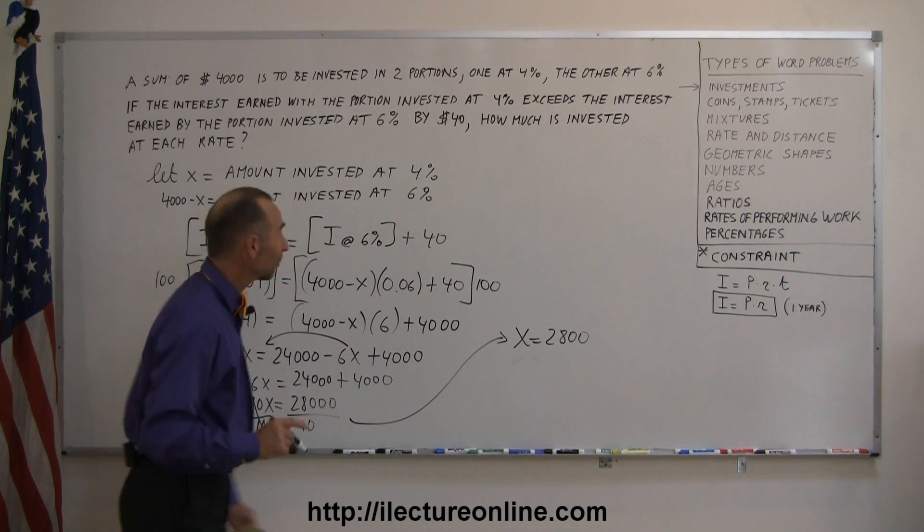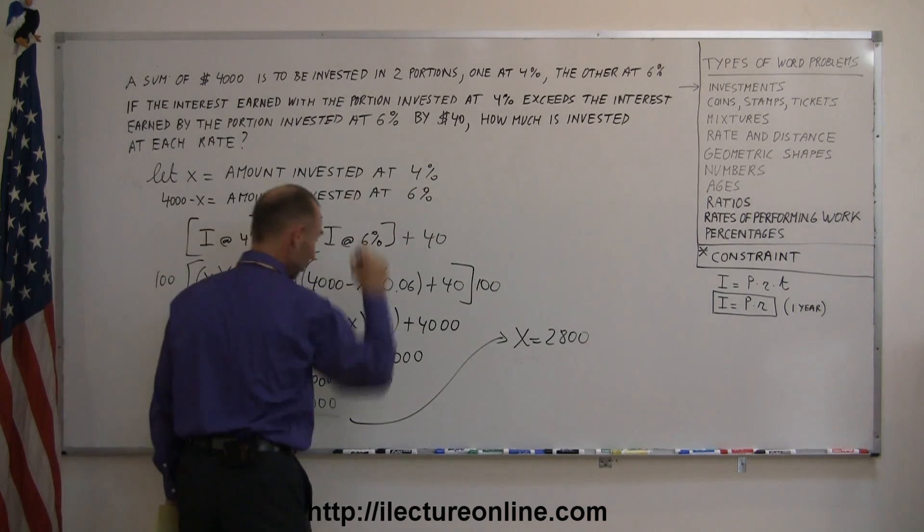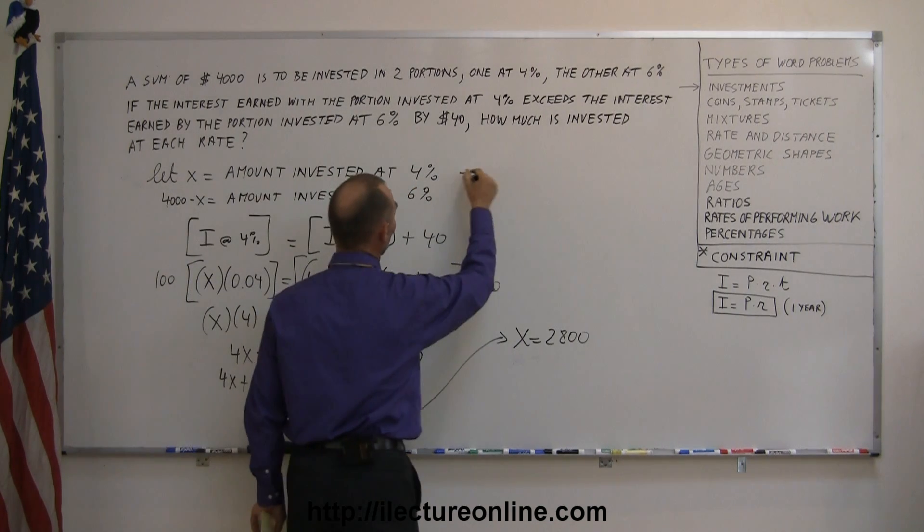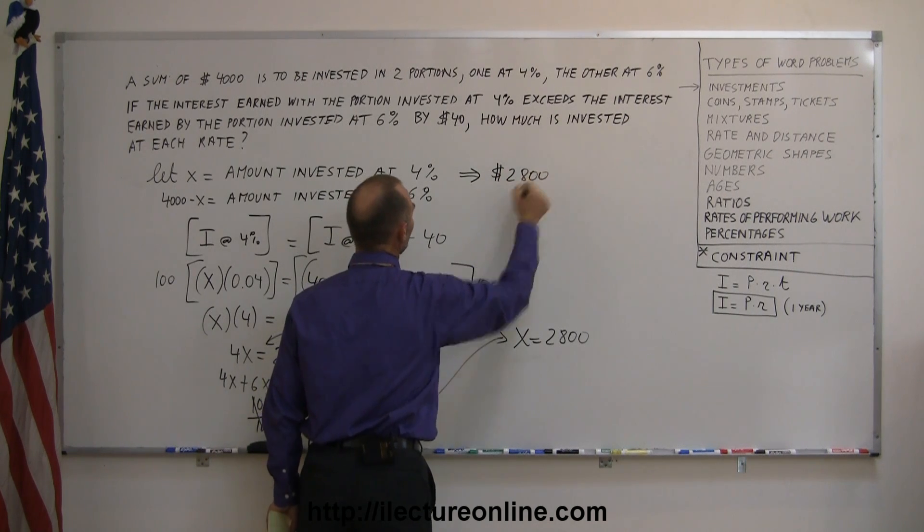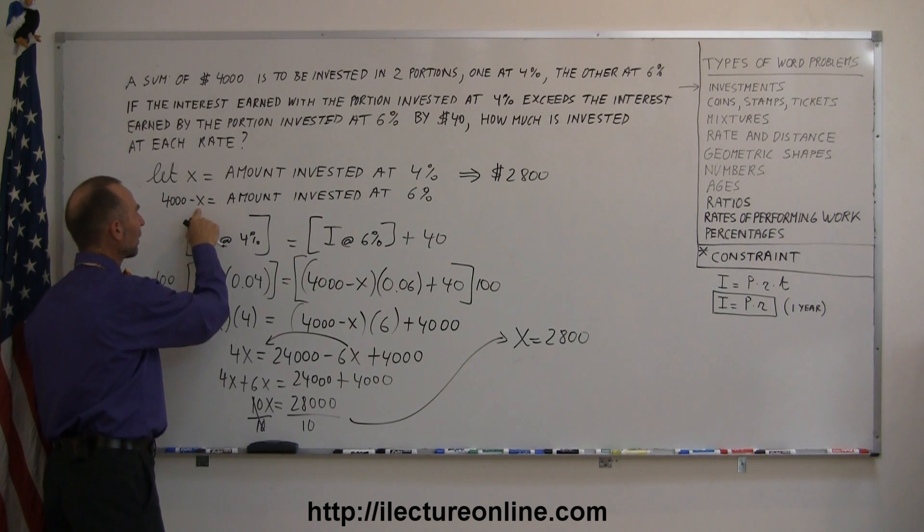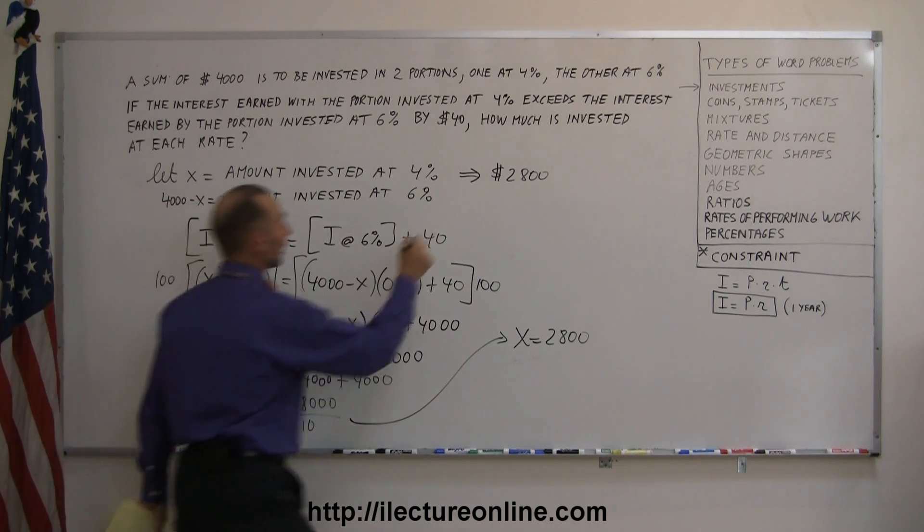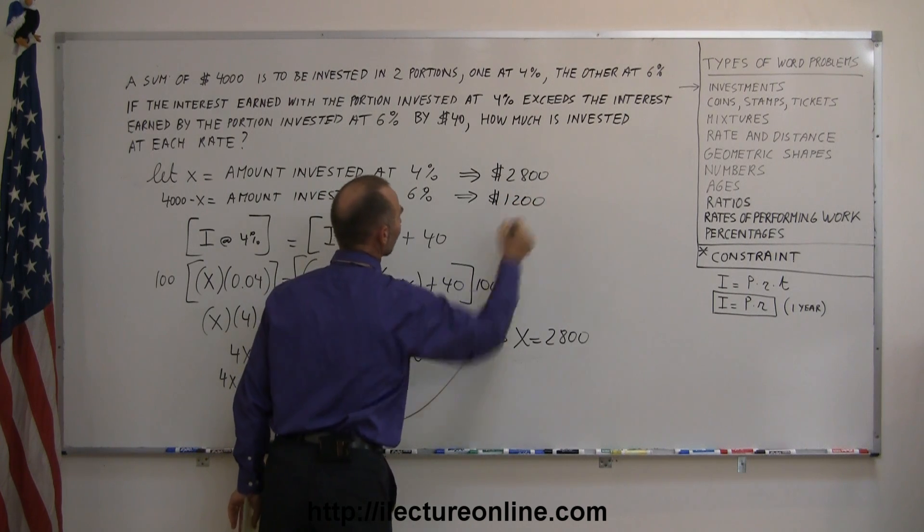And since we did such a good job defining what X was, X was the amount invested at 4%, so the amount invested at 4% is $2800. And that leaves 4,000 minus 2800, which is 1200, that leaves $1200, which was invested at 6%.